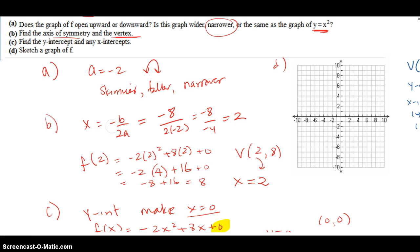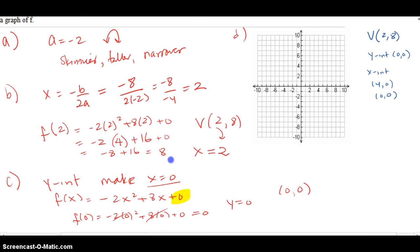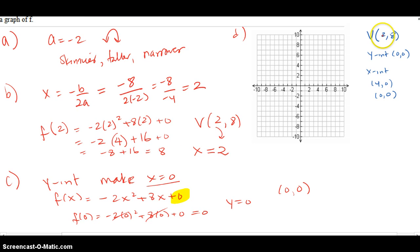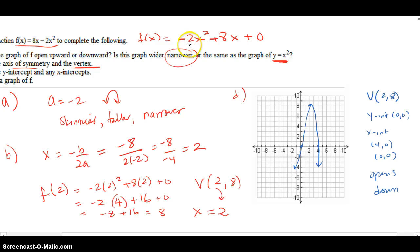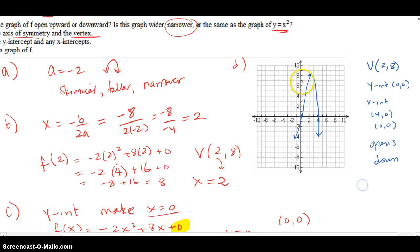Part D tells us to sketch the graph using all the information. I have the vertex, the y-intercept, and the two x-intercepts. We know it opens down because the leading coefficient is negative. Putting it all together gives the overall parabola.